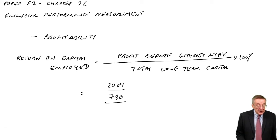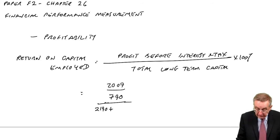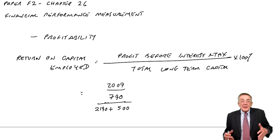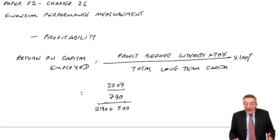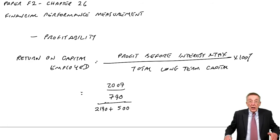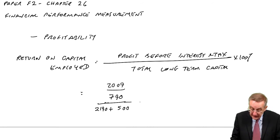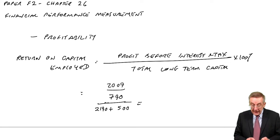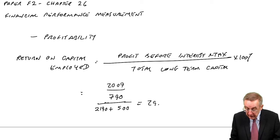We express that as a percent of the total long-term capital. The total long-term money in the business is the share capital and reserves, which are 2190, plus the non-current liabilities, which are 500. It's all the long-term money in the company. If the company needs more money, they can either issue more shares or they can raise more long-term borrowing. But in total, the long-term finance is 2,690. And so in percentage terms, 790 divided by 2,690 is 29.4%.